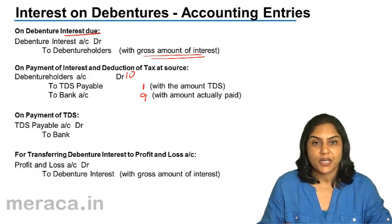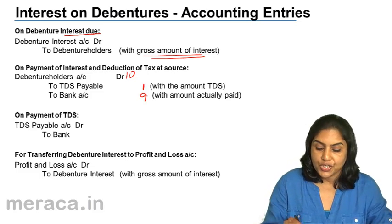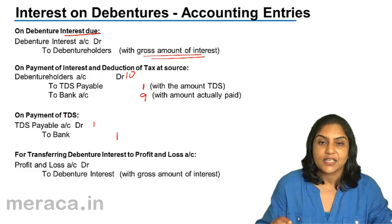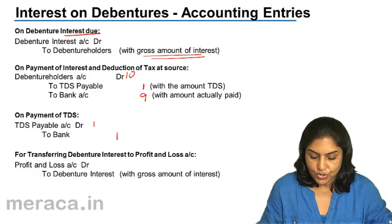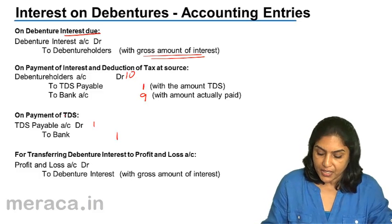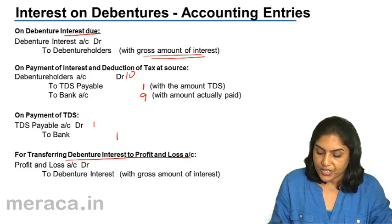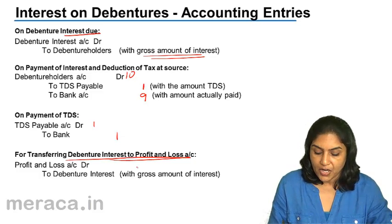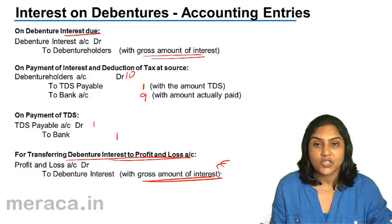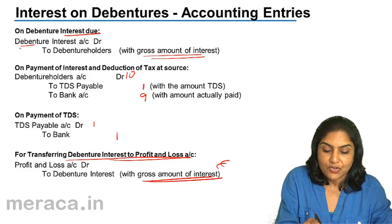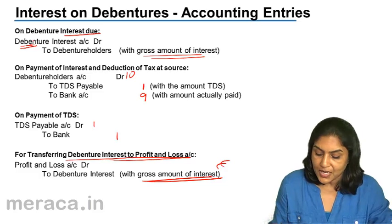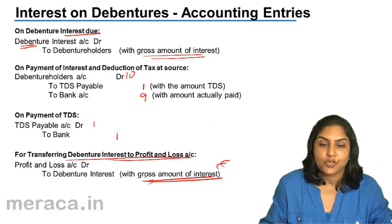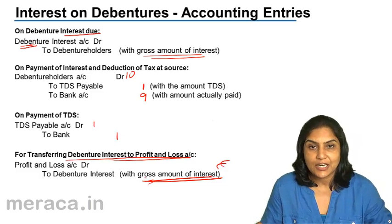TDS also has to be deposited by the company: TDS payable account debit to bank ₹1, and the TDS liability is closed. At the end of the year, the debenture interest needs to be transferred to the profit and loss account: profit and loss account debit to debenture interest with the gross amount of interest. The debenture interest account has been debited with ₹10, so ₹10 is transferred to the profit and loss account.